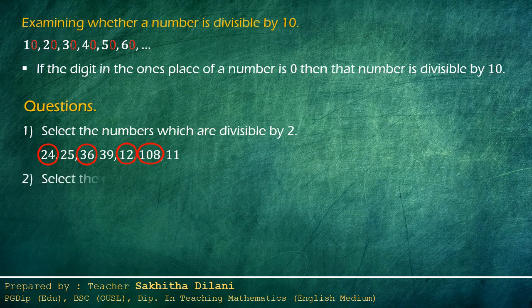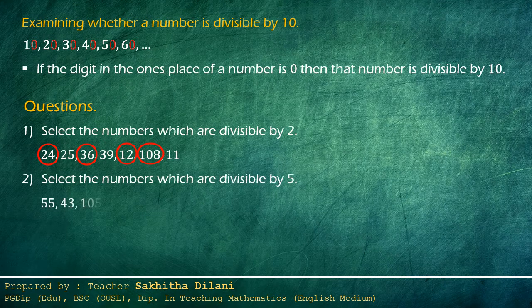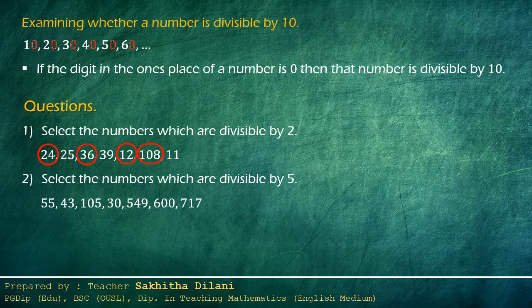Second question: select the numbers which are divisible by five. Here also you are given seven numbers. You have to examine the ones place digit of these numbers to identify numbers divisible by five — they should be zero or five. The numbers 55, 105, and 600 are divisible by five without a remainder, as their last digit or ones place digits are always zero or five.